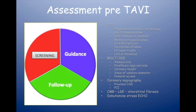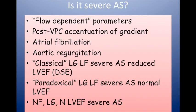Cardiac MRI and dobutamine stress echo are important in certain situations. Regarding severe AS: you all know about the limitations of flow-dependent parameters. If a patient has anemia, moderate AS may appear severe. Atrial fibrillation and aortic regurgitation will increase the gradient. There are special situations: the classical low-flow, low-gradient severe aortic stenosis with reduced LV function requires dobutamine stress echo to tell whether it's severe or pseudo-severe. There's also paradoxical low-flow, low-gradient AS with normal LV function, where a very small hypertrophied ventricle gives low stroke volume and therefore low gradient.